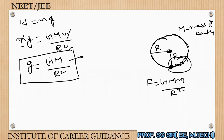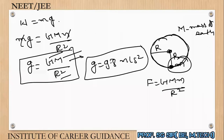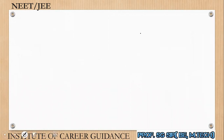Now, this G is constant, the mass of Earth is also constant, and the radius of Earth is also constant. So the concept up to here is clear. Now in the next case, I need to find the acceleration due to gravity at height h.